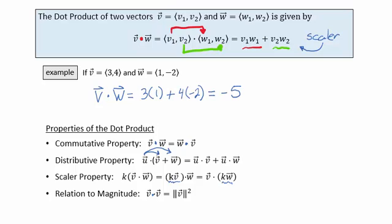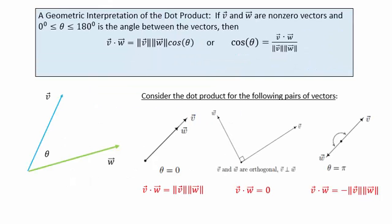Now let's look at a geometric interpretation of the dot product. If v and w are two non-zero vectors and theta is the angle between v and w, then the dot product of v and w can also be calculated by looking at the magnitude of v times the magnitude of w times the cosine of the angle theta. In many problems we're interested in finding this angle, so we'll solve for the cosine of theta by dividing by the magnitudes.